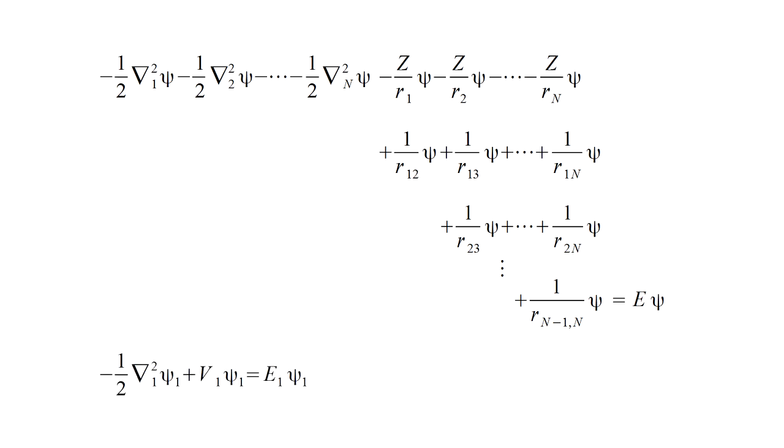Hartree converted this to an equivalent single electron equation by, roughly speaking, the following steps. Suppose we want an equation for electron one. We assume the distribution of the n minus one other electrons remains frozen. This allows us to subtract the constant kinetic energies of those electrons from both sides of the equation, leaving the kinetic energy term for only electron one.